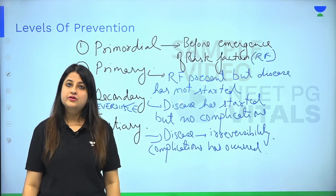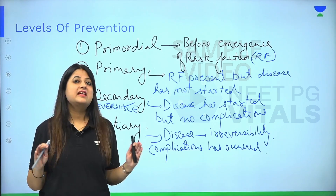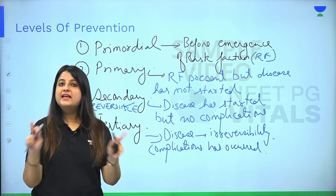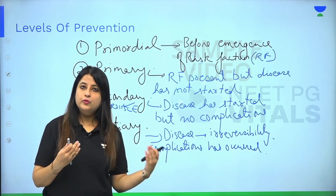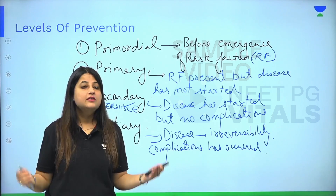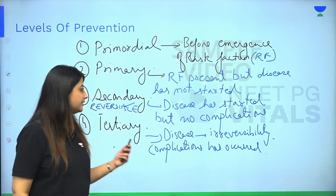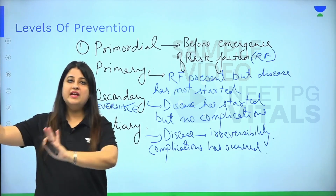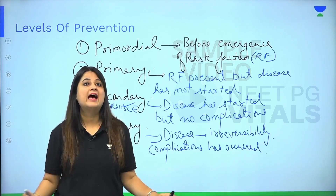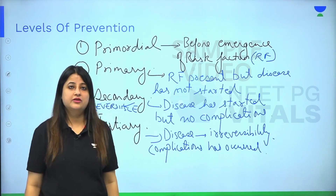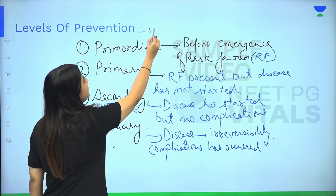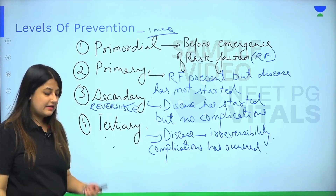Secondary level of prevention is when disease has started — it's in the early pathogenesis stage — but complications have not yet occurred. For example, due to being exposed to risk factors, the person may now be developing hypertension, so changes pertaining to hypertension have started. Tertiary is when disease has progressed to a stage of irreversibility — complications due to hypertension have occurred. That is tertiary level of prevention. This is the basic definition, and you can expect one MCQ from it.